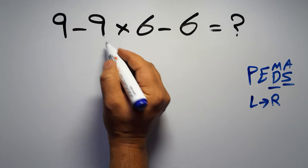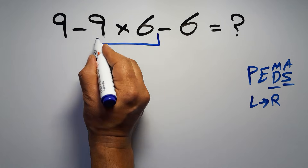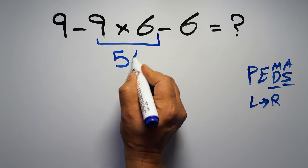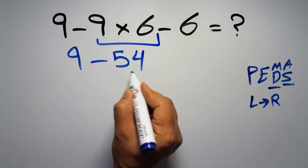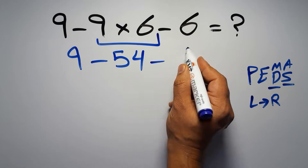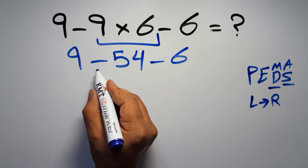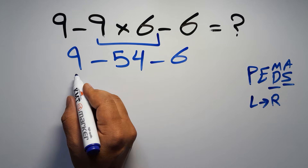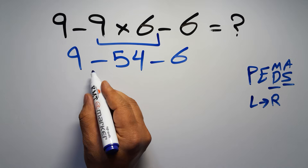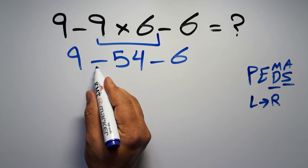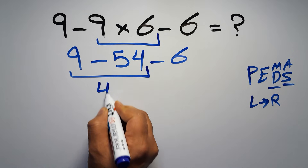So first we do the multiplication: 9 times 6 equals 54. So we have 9 minus 54 minus 6. Now we have two subtractions, and when we have more than one subtraction in an expression, we have to work from left to right. So first we do 9 minus 54, which gives us negative 45.